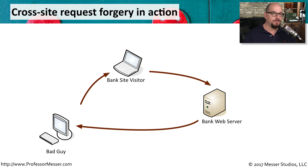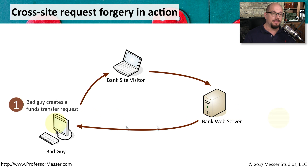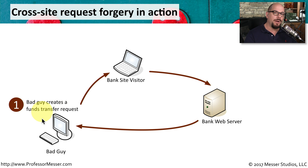Here's how a cross-site request forgery works. There are three devices operating here. We have first our bad guy, then we have a visitor to the bank site — someone who's logging into their normal bank account — and then we have the bank web server itself. In the first step, the bad guy is going to create a funds transfer request. This is not a request that's going to come from his account; it's going to come from someone else's account. But he needs someone else to perform this transfer for him.